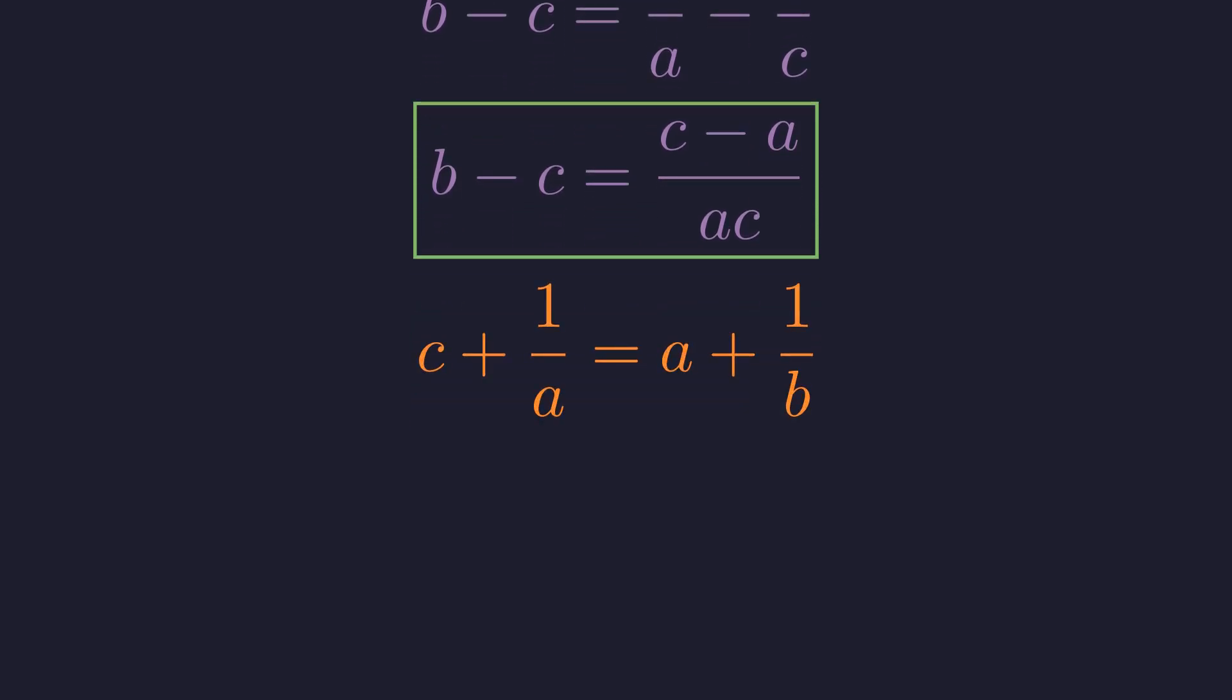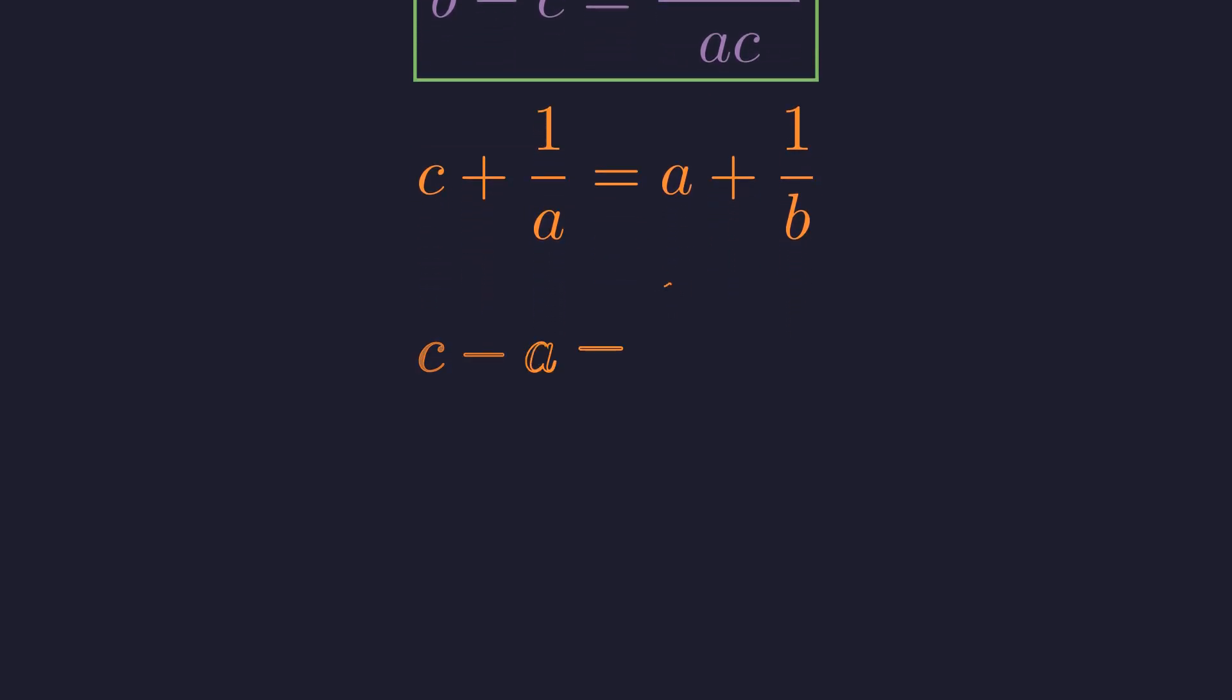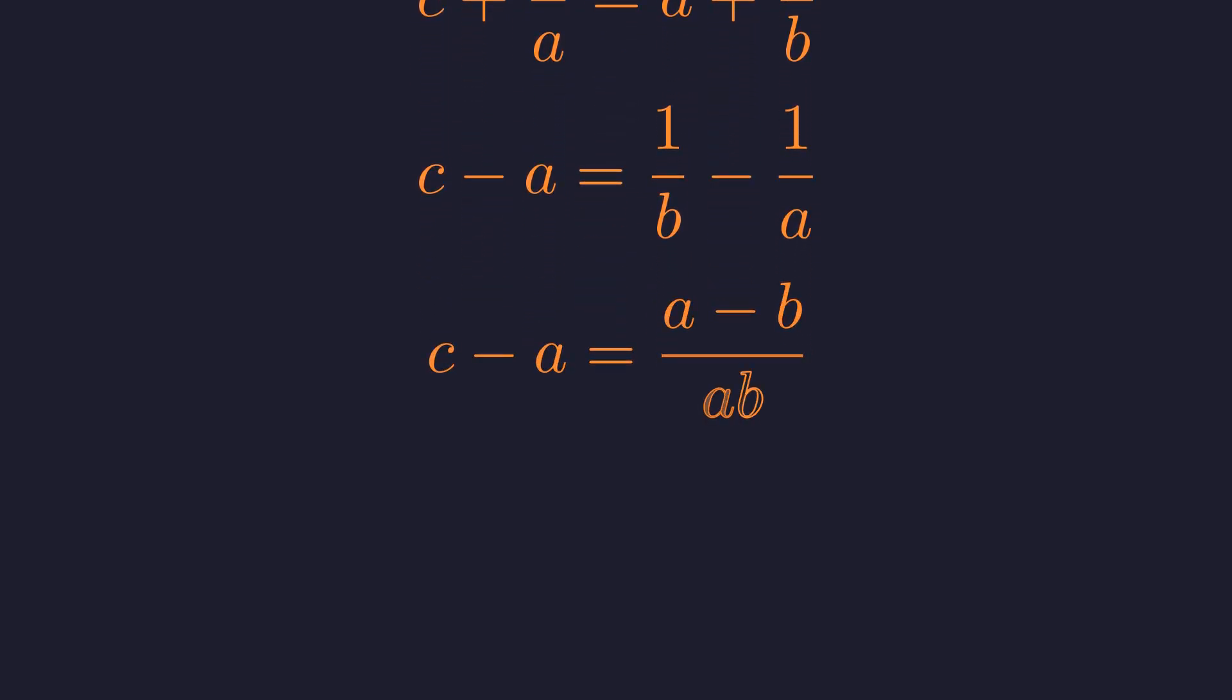Finally, we do the same for the third and first parts of the original equality. We rearrange the terms just as before and we get our third and final relationship. Notice that each equation was formed using the same process, always grouping the variables and their reciprocals and combining fractions in the same way. This highlights the symmetry in the problem.